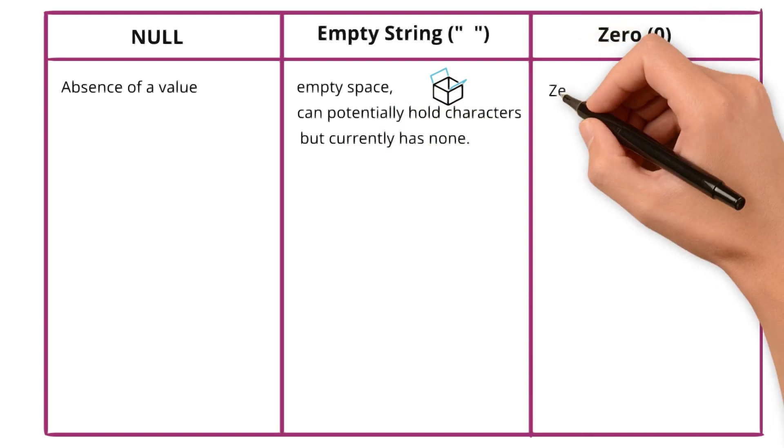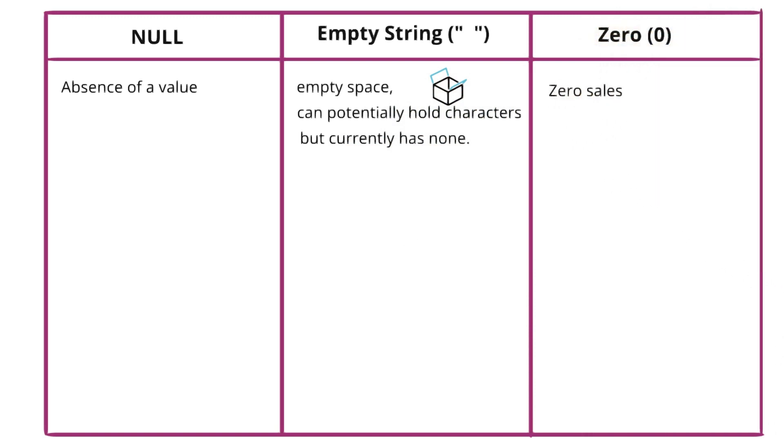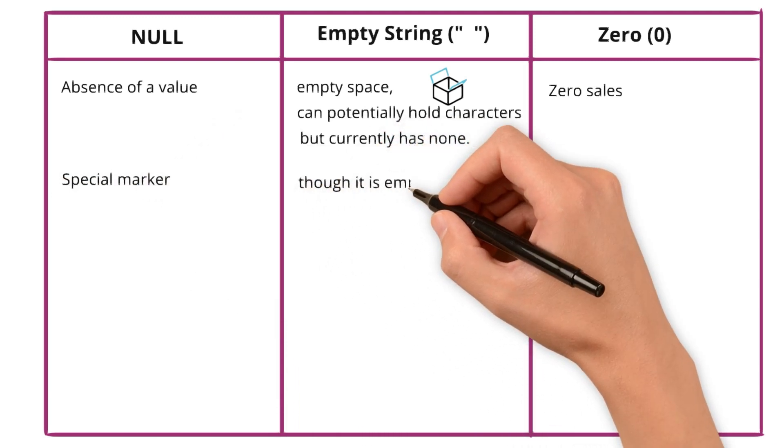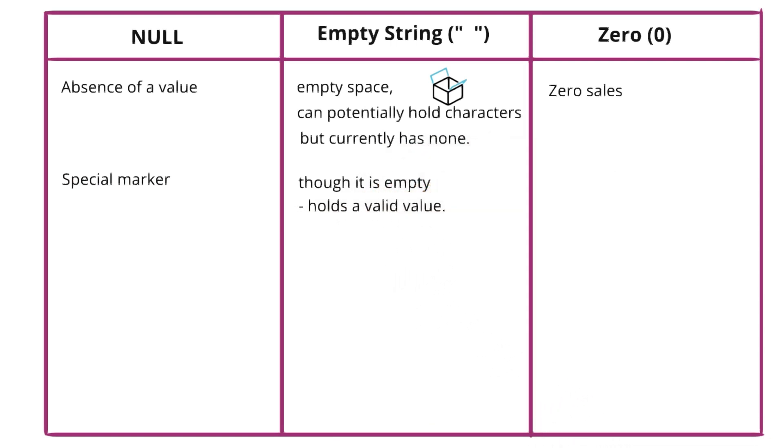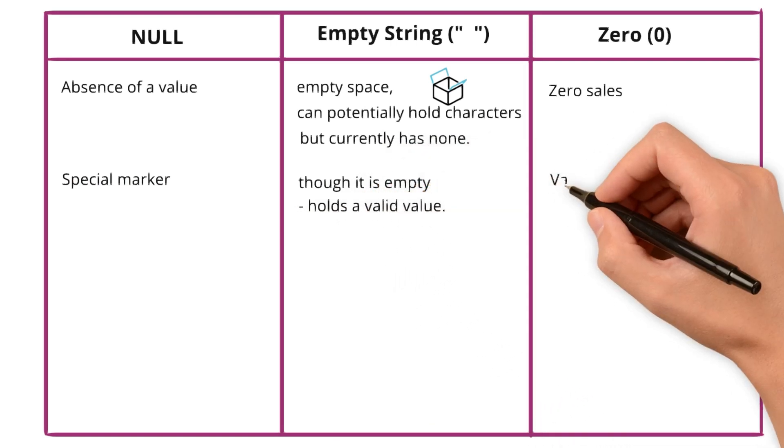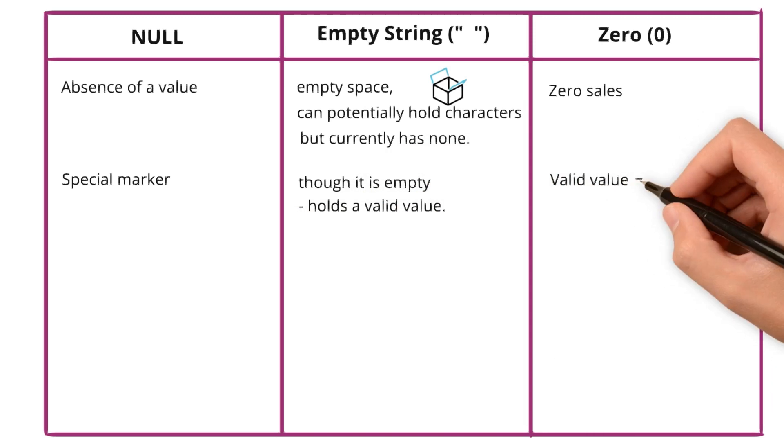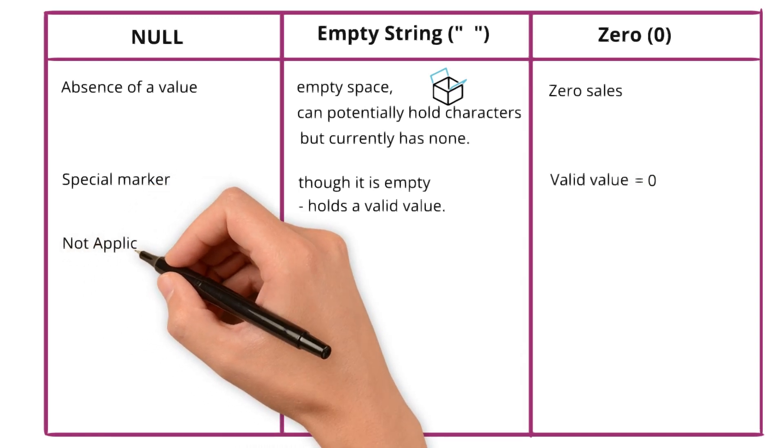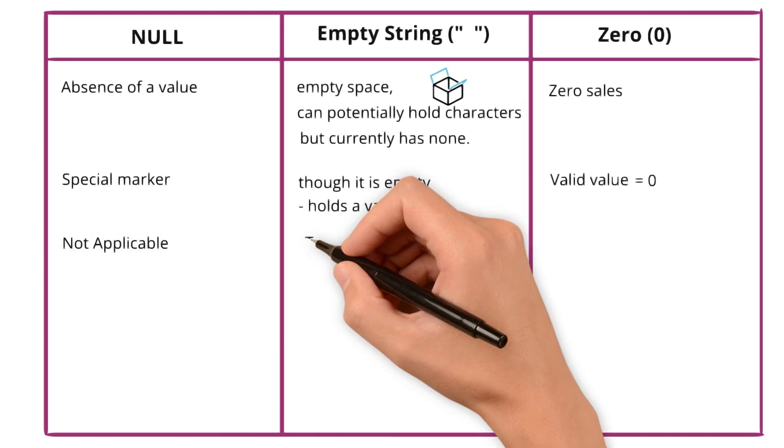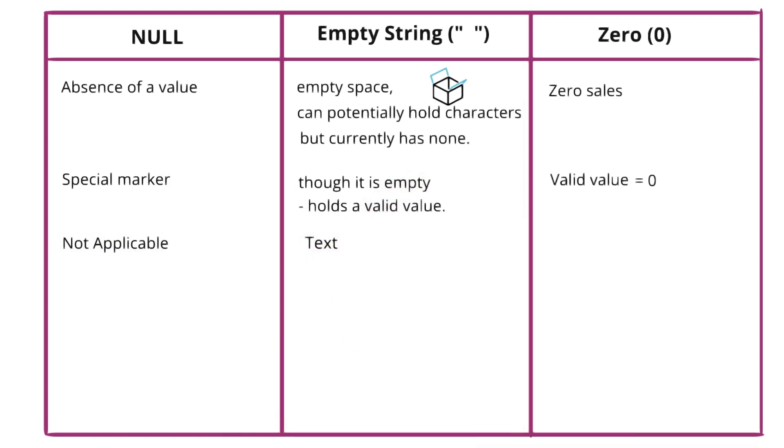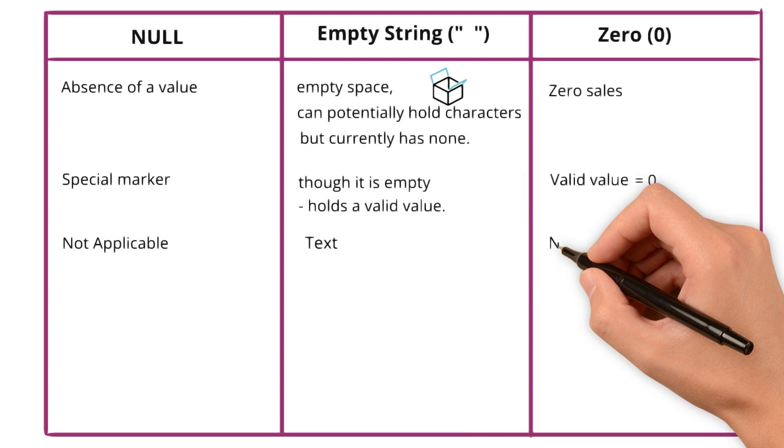0 value as in 0 sales. Null is treated as special marker and though it is empty, empty string holds a valid value. It's the same for 0. It holds a valid value which is 0. Data type of the null, of course, since there is no data, the type of data is not applicable for null. Whereas empty string's data type is text and for 0 it is numeric.